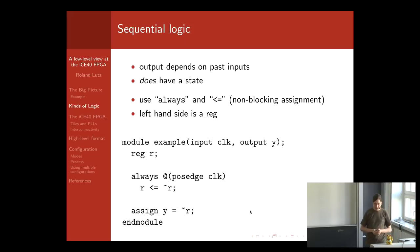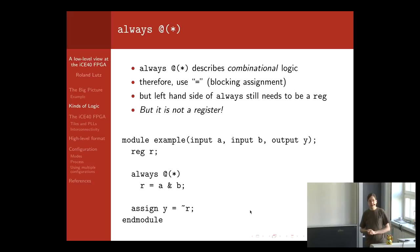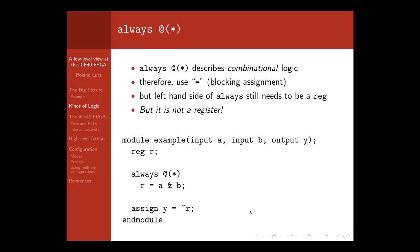There is another type of logic which can be confusing: ALWAYS can be used to express combinatorial logic. If you have ALWAYS @(*), this means every time something on the right-hand side changes, the left side is re-evaluated — which is the definition of combinatorial logic. You use an equal sign in this case, and R needs to be declared as a reg, but there is no flip-flop synthesized from this in the FPGA.